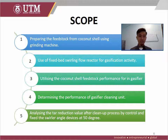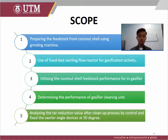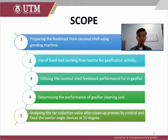Next, the scope of this project. First, the fixed feedstock from coconut shell is prepared using a grinding machine to obtain a smaller size of the feedstock. Second, the fixed bed swirling flow reactor is used for the gasification activity. Third, utilizing the coconut shell feedstock performance for the gasifier. Fourth, determining the performance of the gasifier cleaning unit. And last, analyzing the tar reduction value after the cleanup process by controlling the circular angle device at 50 degrees.